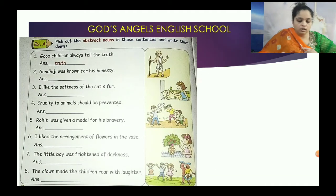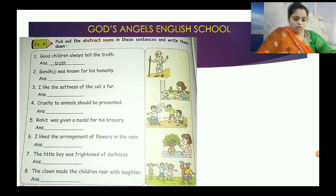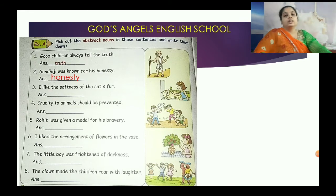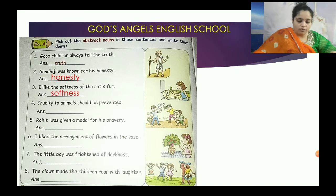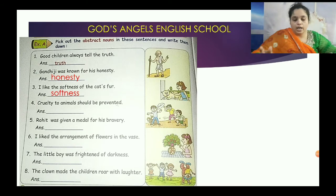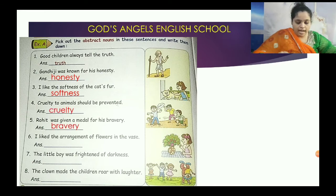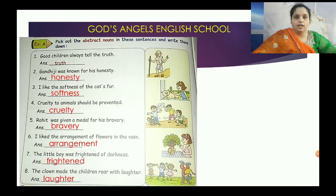Now here are the exercises you have to solve. Good children always tell the truth. Gandhiji was known for his honesty. I like the softness of the cat's fur. Cruelty — jo ham feel kar sakte hai — wo word abstract noun hoga. Cruelty to animals should be prevented. Rohit was given a medal for his bravery. I like the arrangement of flowers in the vase. The little boy was frightened of the darkness. The clown made the children roar with laughter.